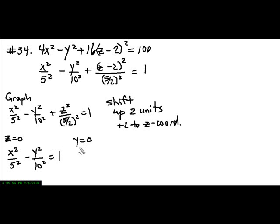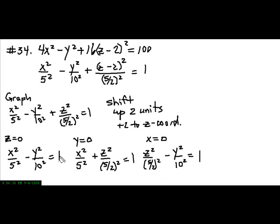And we'll get to that in a minute. When y is equal to 0, and we're looking at the xz-plane, we're going to have the shape x²/5² + z²/(5/2)² = 1. Now, this being positive in the center, this is going to be an ellipse with a major axis along the x-axis. And then finally, when we let x equal 0, we're going to have z²/(5/2)² - y²/10² = 1. That's going to be a hyperbola as well.